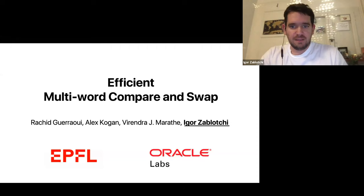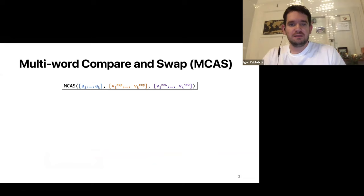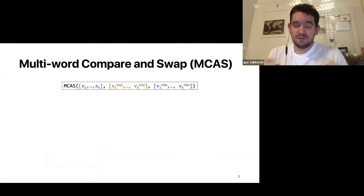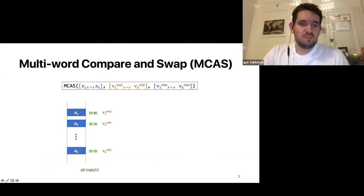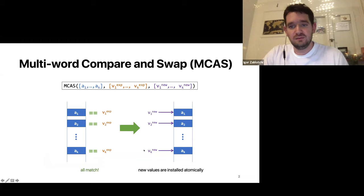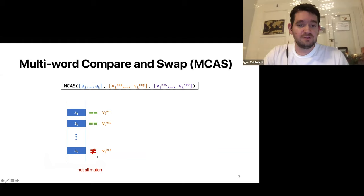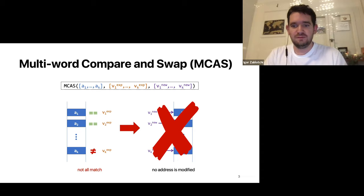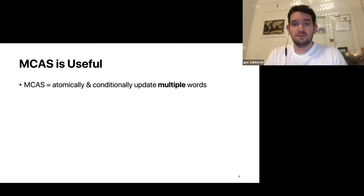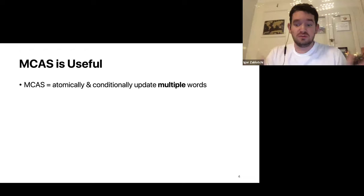MCAS is a generalization of the well-known compare-and-swap primitive for shared memory. MCAS takes a list of addresses, expected values, and new values. It compares the contents of addresses to expected values; if they all match, new values are installed atomically. Otherwise, nothing happens—no address is modified. MCAS is a quite powerful primitive because it allows us to atomically and conditionally update multiple words, even if they are not contiguous in memory, which has the potential to simplify complex algorithms.